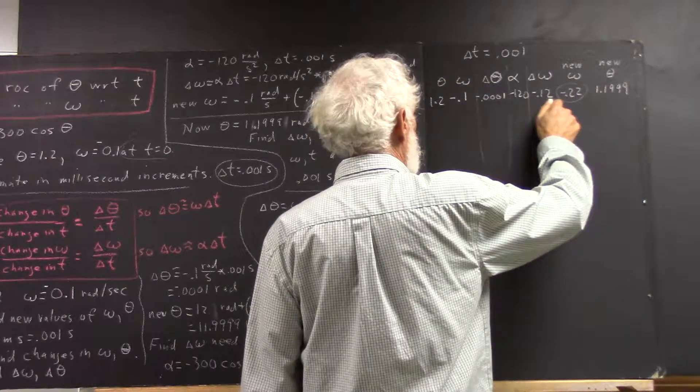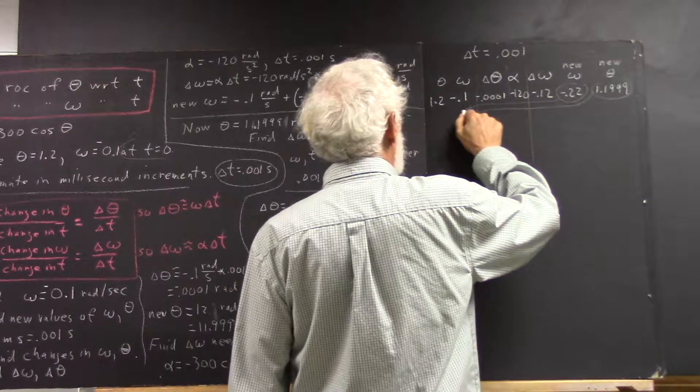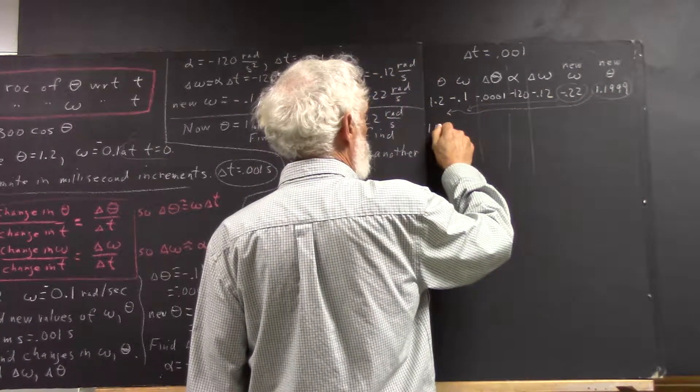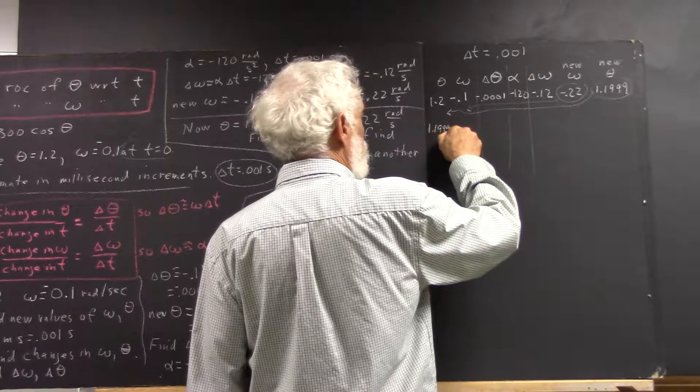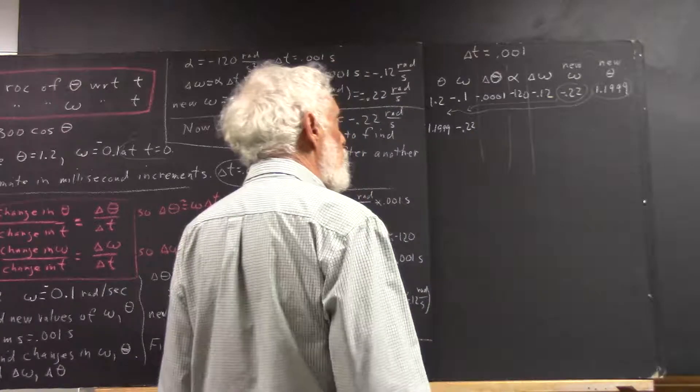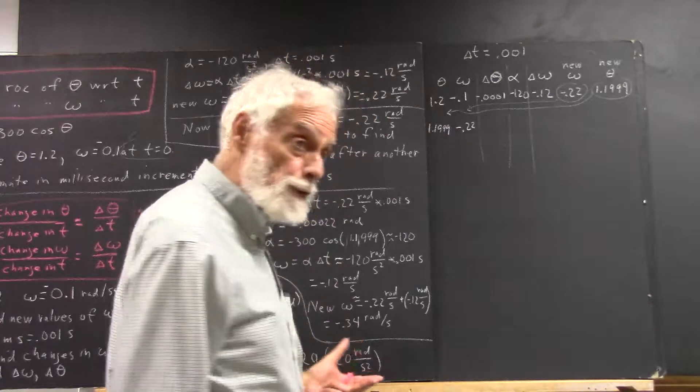Our new omega can go here, our new theta can go here. So we got 1.1999 and we got negative 0.22 here. Our delta theta we calculated, and remember the reasons why we're calculating these.